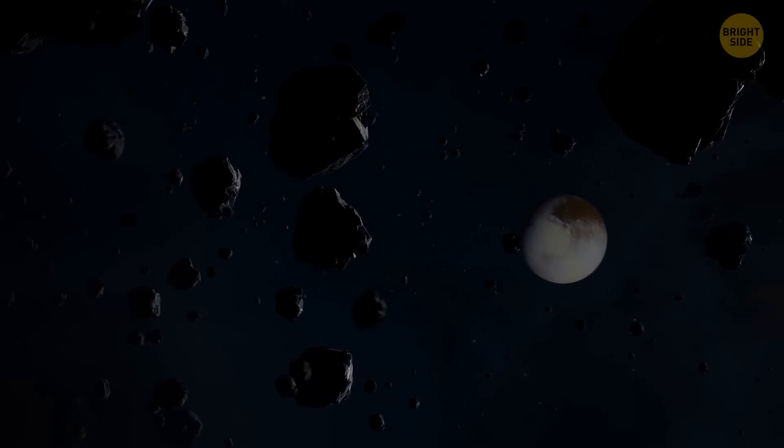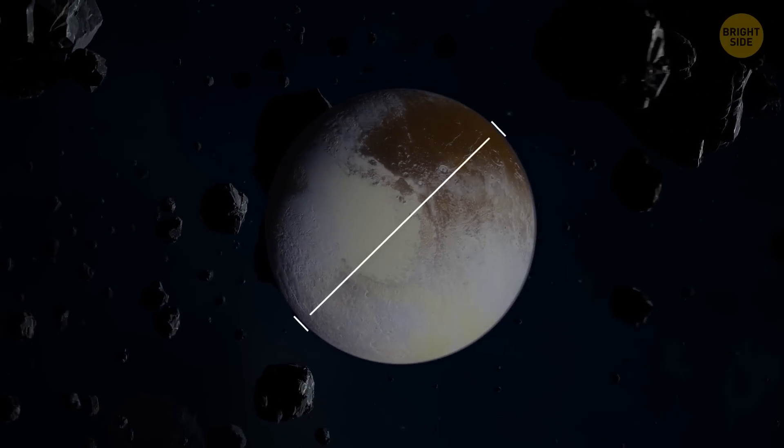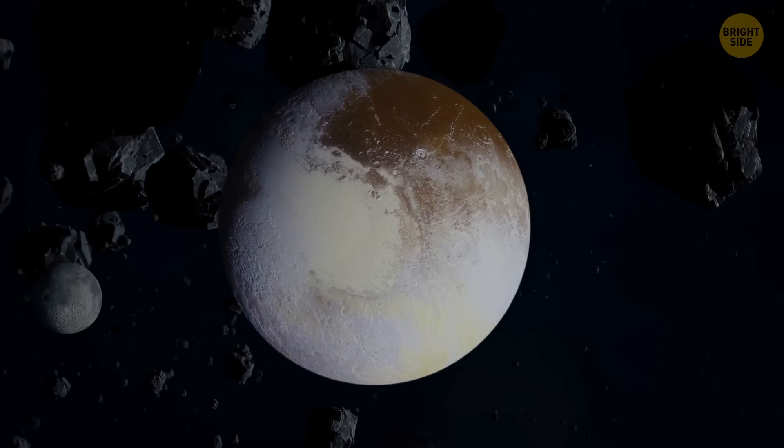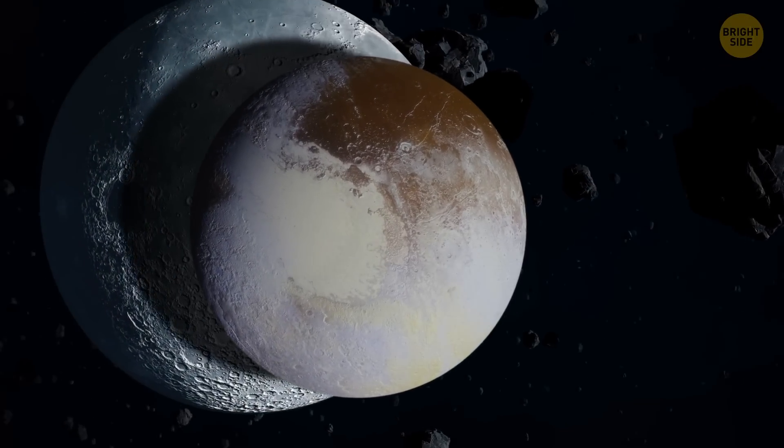You already know that it's small, but it's remarkable just how small it is. Pluto has a width of about 1,400 miles. It's about half the size of the United States and smaller than our Moon.